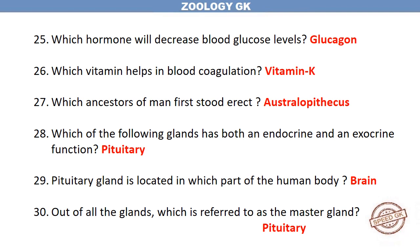Which ancestor of man first stood erect? Australopithecus. Which of the following glands has both an endocrine and an exocrine function? Pituitary. The pituitary gland is located in which part of the human body? Brain.